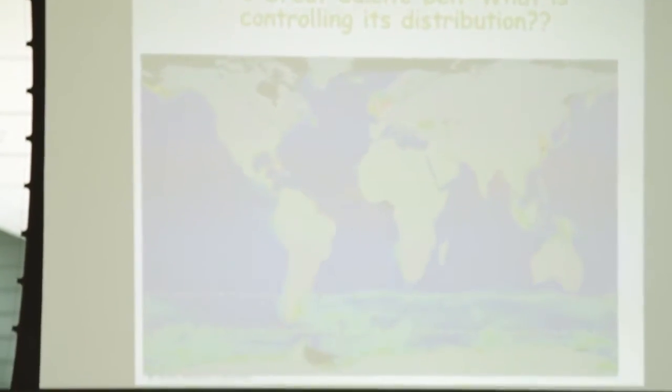The other thing that gets me up in the morning is a project where we've been working in the Southern Ocean, and this is down in this area I call the Great Calcite Belt. This is a climatology of particular inorganic carbon, calcium carbonate, observed over the Southern Ocean and observed over 12 years of satellite imagery.